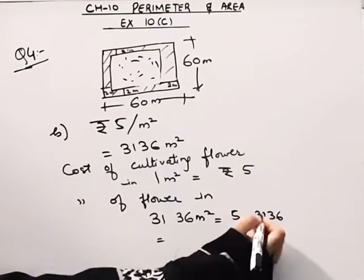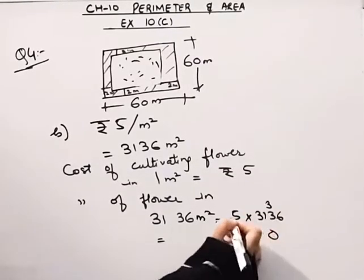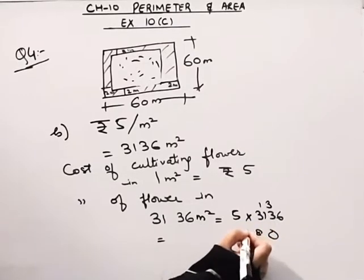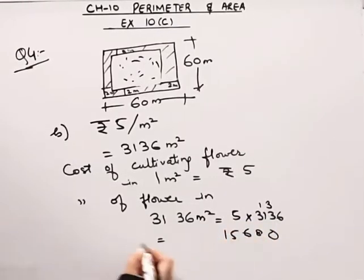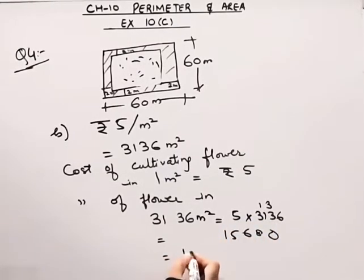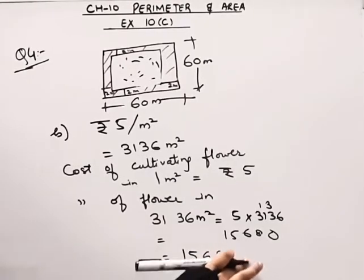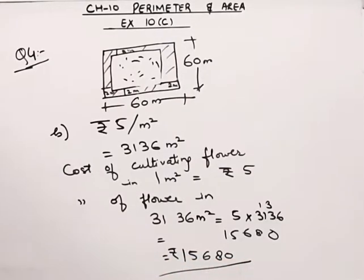Multiplying: 5 sixes are 30, 5 threes are 15, carry 18, 5 fives are 25, 5 threes are 15 — this comes out to be rupees 15680. That is our cost. Now we will move on to question number 5.